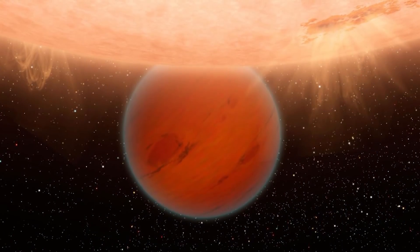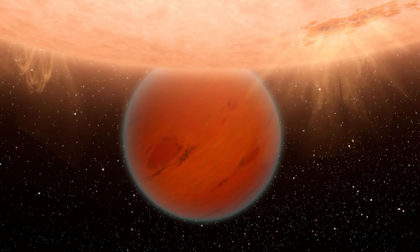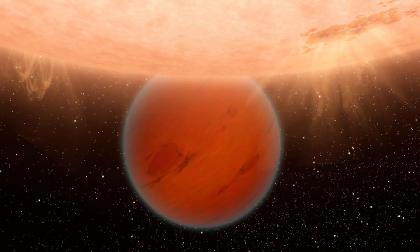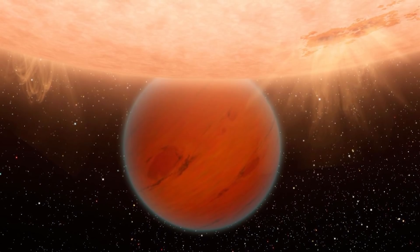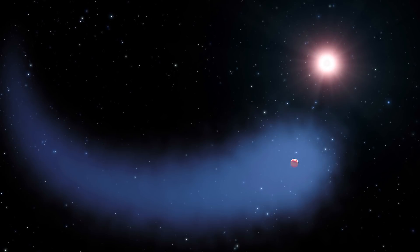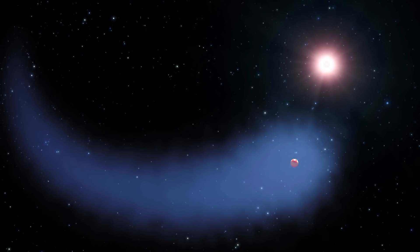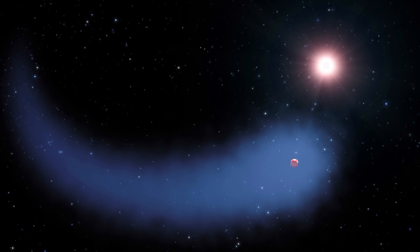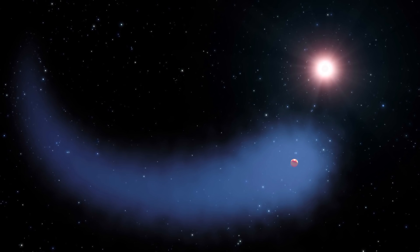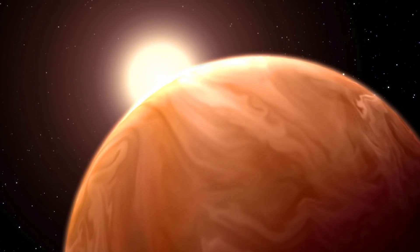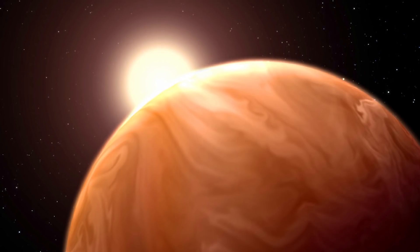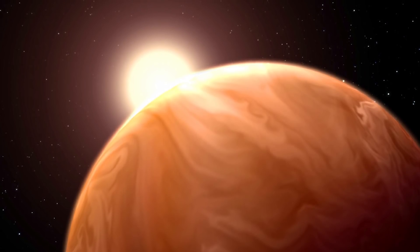There is a planet that has burning ice. GJ436b is a Neptune-sized exoplanet orbiting a small and relatively cool red star, approximately 30 light-years away from Earth. This exoplanet is home to an apparent paradox in the form of burning ice. Yes, ice that is so hot it can vaporize a human being on contact. Typical gas giants are largely composed of hydrogen and helium, and have significant quantities of methane in their atmospheres.